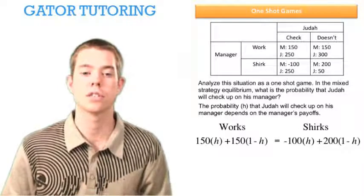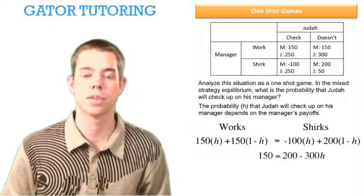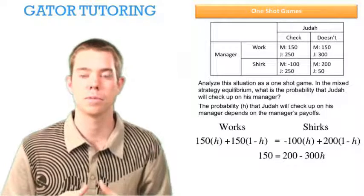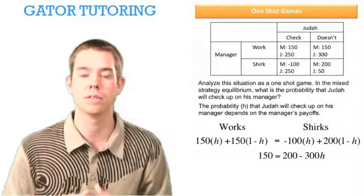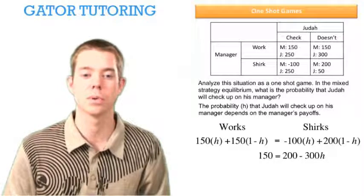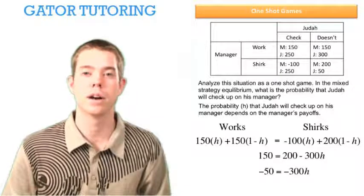To solve for H, we're going to set these two equations equal. So on the left side, we see that simplifies down to just 150 because you have the 150Hs canceling out and you're just left with 150. And that makes sense because when he works, we know he's going to make 150 for sure, 100%. On the right-hand side, we simplify this down and we get 200 minus 300H. So now we can solve and we find that H is equal to 0.166.